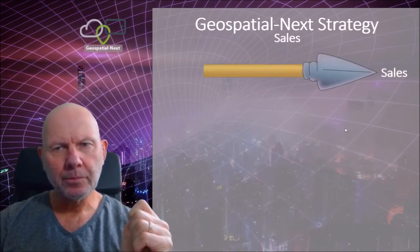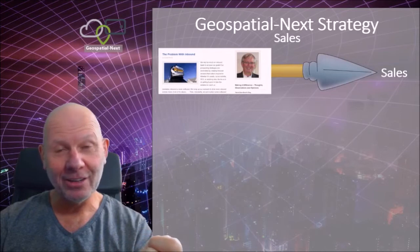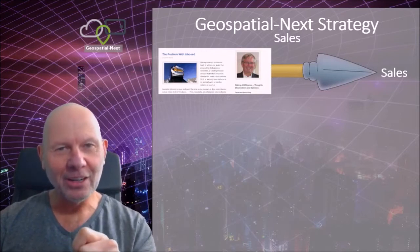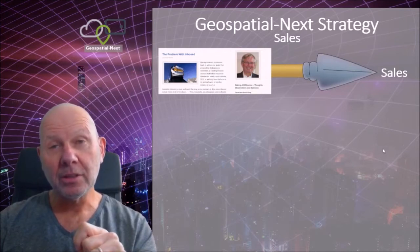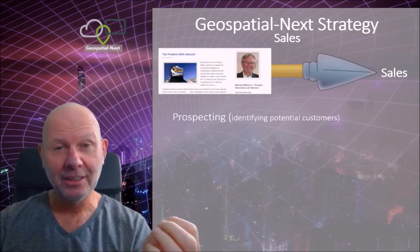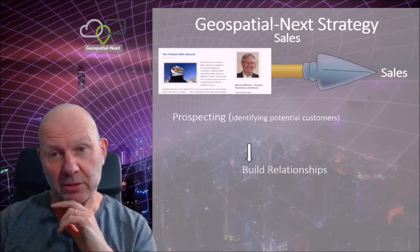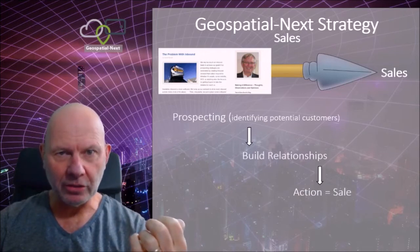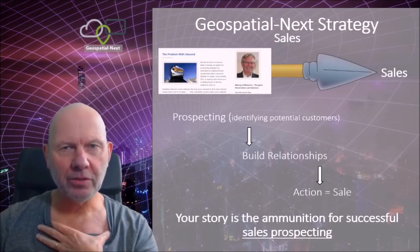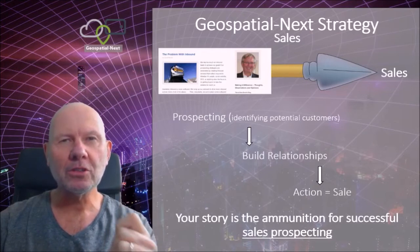Let's jump to sales. Using the spear analogy again, the point of the spear is usually sales. I'm going to point you at Dave Brock — somebody I really like. He writes a really good blog, super experienced sales guy, I love some of the stuff he writes. Sales guys do prospecting — identifying potential customers — which could be leads passed from marketing or new folks to connect with. Ultimately, what sales are doing is building relationships and driving down to an action: a sale. I'll emphasize it: your story is the ammunition for successful sales prospecting. If you don't have a good story, you're not going to be so successful in sales prospecting.